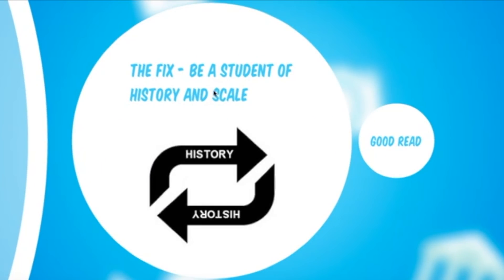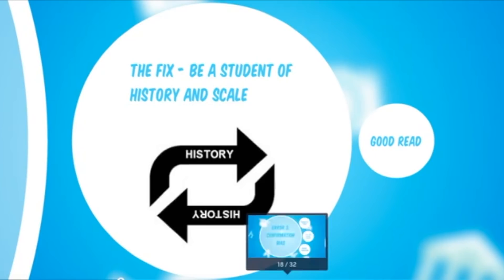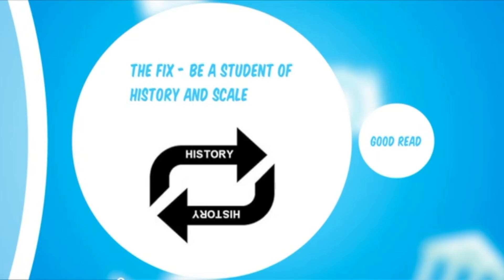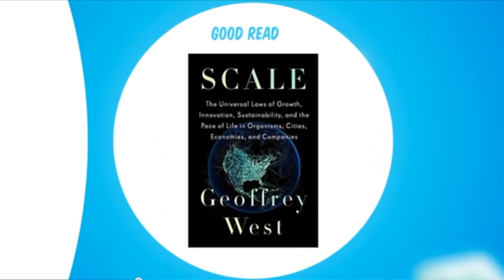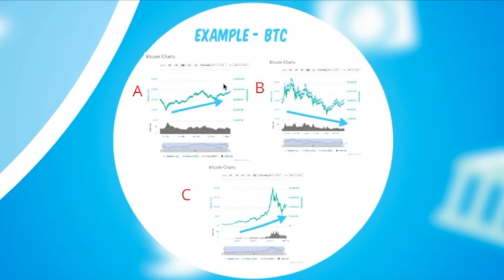To fix recency bias, be a student of history and scale. History repeats itself, and scale is critically important. It's about the bird's eye view versus the mouse's eye view - what depth are you looking at? There's an interesting book by Geoffrey West with a theory about how there are basic scaling mechanisms that drive repeating patterns in biology, city planning, and corporation growth.